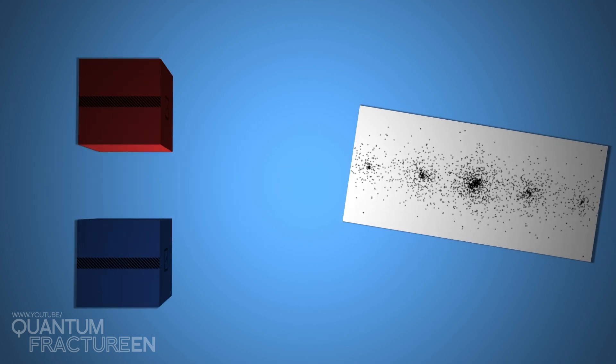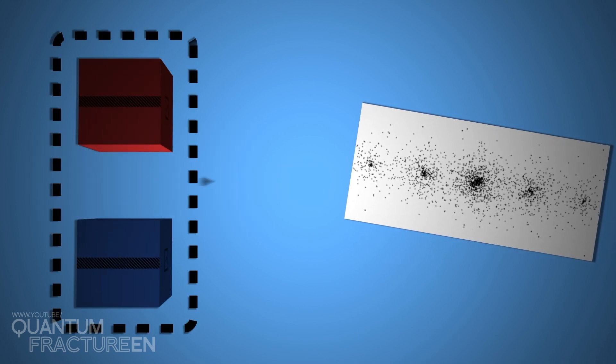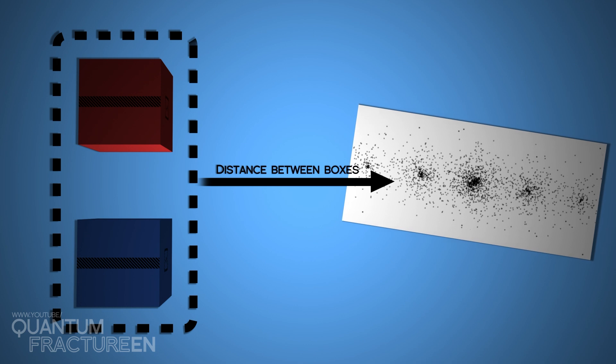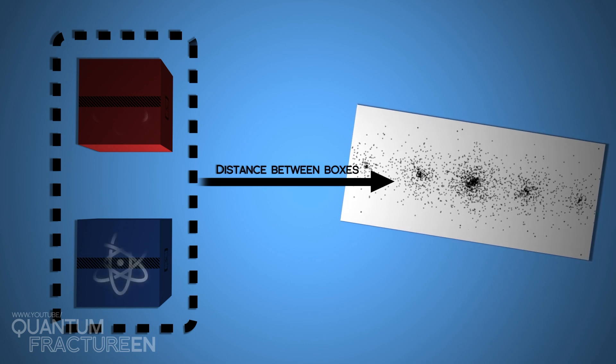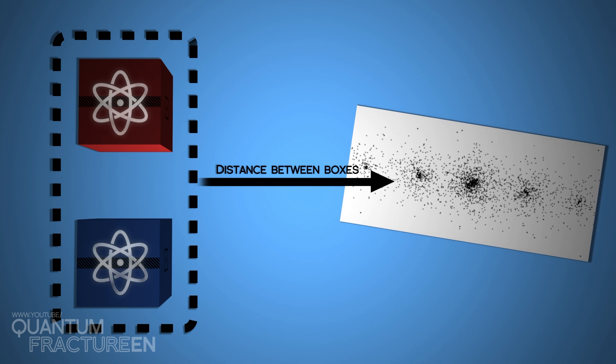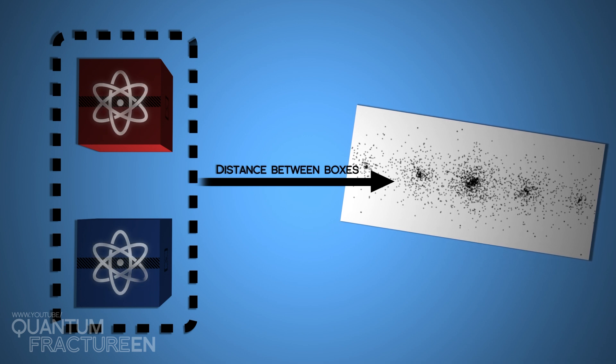In other words, both boxes are working together to create this pattern. And the only way their combined properties can make it to the screen is if the atom also has that information, being in both boxes in the exact same way.